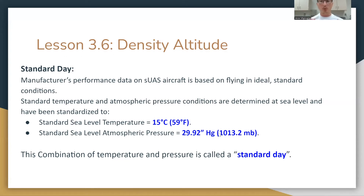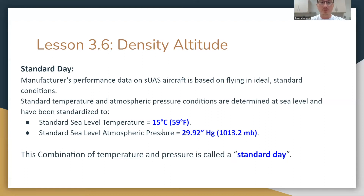Know these — they might ask you a straight-up question like: what is the standard day atmospheric pressure for a drone, or what do drone manufacturers base temperature and pressure on when manufacturing a drone? The answer is 15 degrees Celsius and 29.92 HG. They'll try to mess with you — for example, using 59 degrees Celsius instead of Fahrenheit, or mixing up HG and MBs. I've seen these questions, so be careful of that.